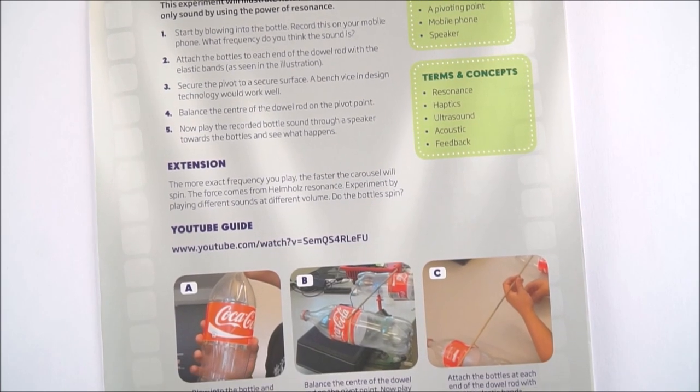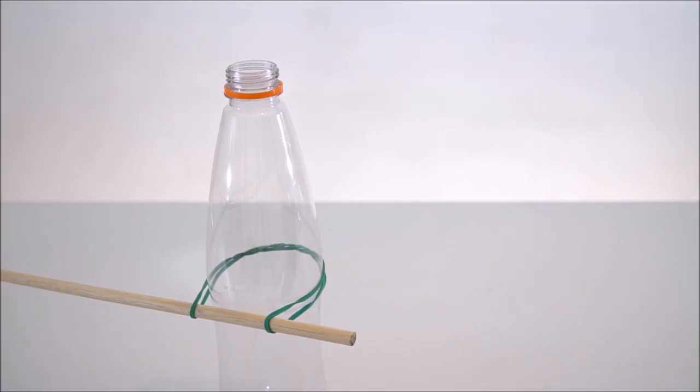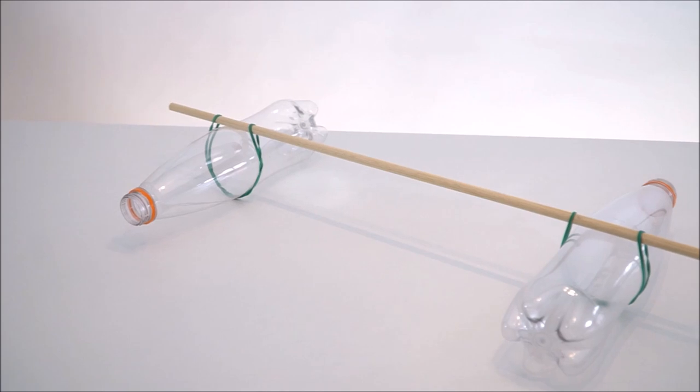Challenge two is called the sound carousel, and here you're using the property of resonance of these empty bottles. So if you blow over the top you can then record the sound that these naturally vibrate at, and then what you need to do...